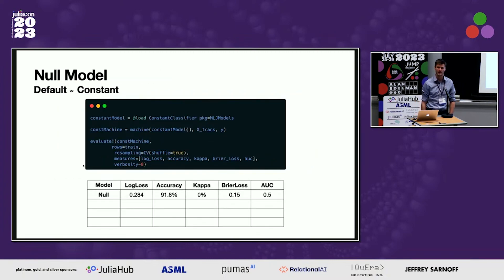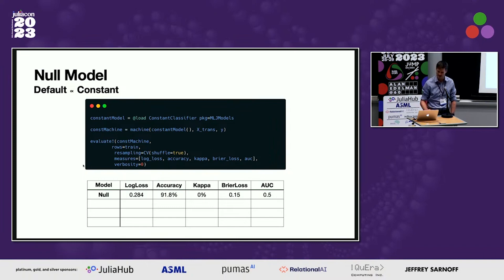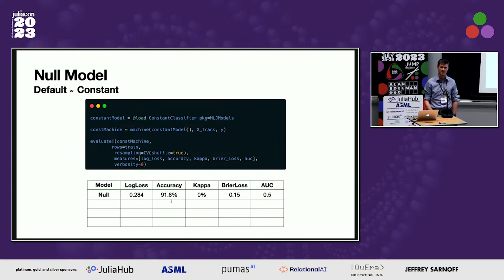The first model we fit is the null model — a constant model that predicts the overall average default rate. This is what all other models must beat. Its accuracy is about 91.8%, meaning loans default roughly less than 10% of the time on average. Every other model we build should exceed this baseline.